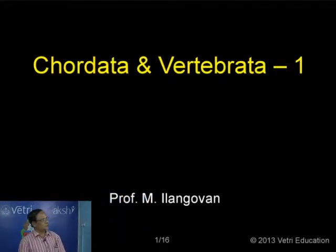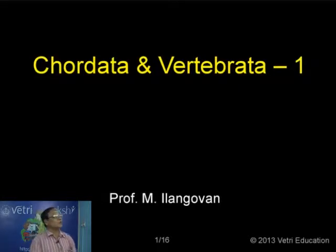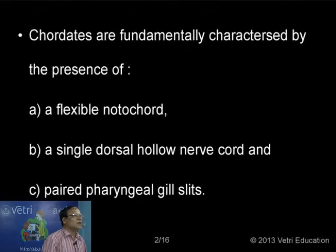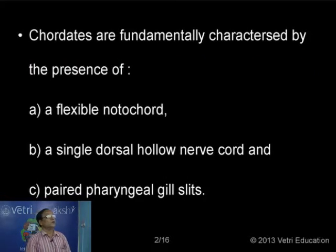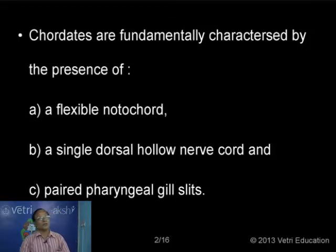We are talking about chordates and also the other category, vertebrates. Let's first start with what are the general characteristics of chordates. How can we say that an animal belongs to the chordates? There are three fundamental characteristics by which the chordates are different from other animal groups.